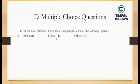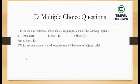The sheet name comes first in the reference. Next question: which combination is used to get the sum of values of adjacent cells? The options are Control+S, Control+apostrophe, or Control+equal.